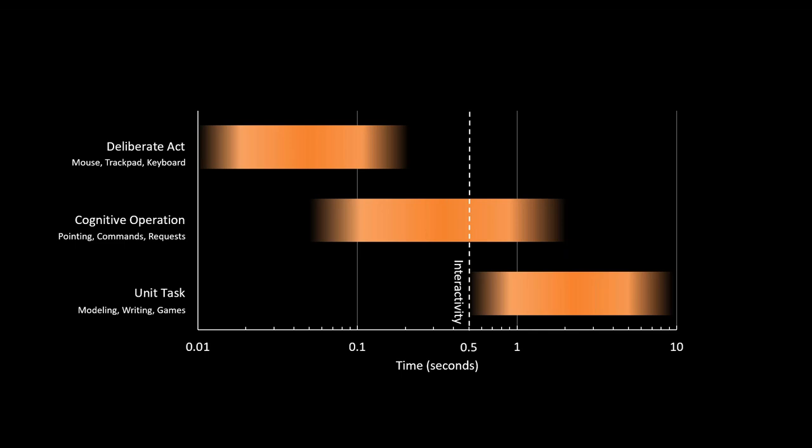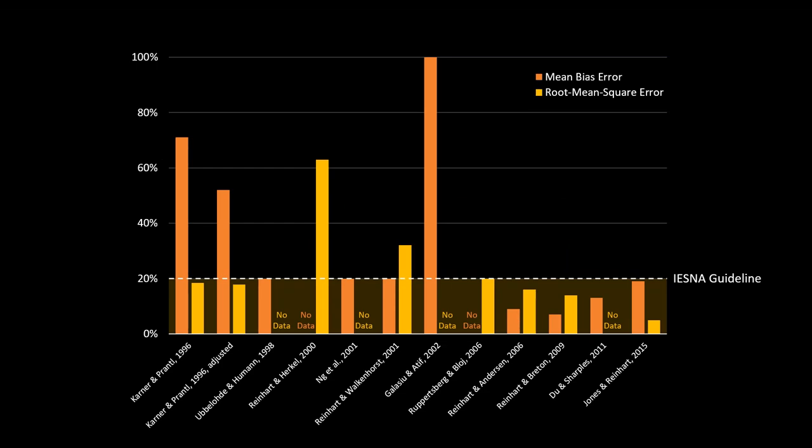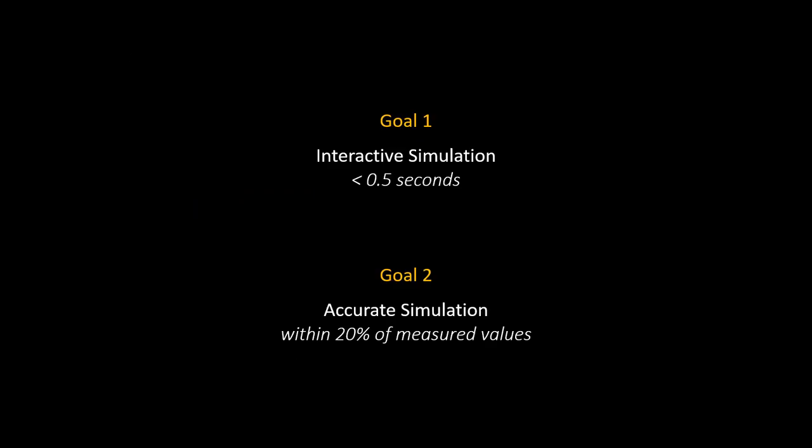One way to get feedback that quickly would be to accept less accuracy—but how accurate do our simulations need to be? Studies of illumination simulations comparing accurate methods to physical measurements show we can achieve simulation accuracies of about 20% within measured values. The Illuminating Engineering Society of North America has independently set a target that simulations should be within 20% of actual values. So my two goals are: simulations that return results within half a second, and simulations accurate to within 20% of measured values.